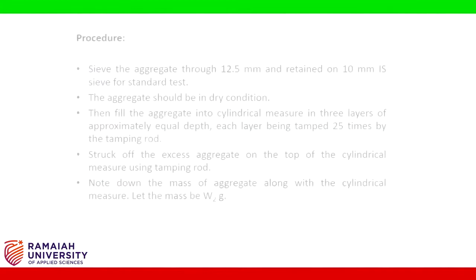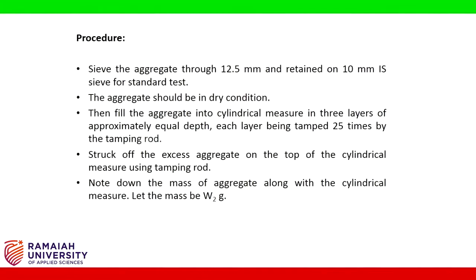To achieve high quality pavement, aggregates possessing a low crushing value should be preferred. Procedure: sieve the aggregate through 12.5 mm and retain on 10 mm IS sieve. For the standard test, the aggregate should be in a dry condition. Then fill the aggregate into the cylindrical measure in three layers of approximately equal depth, each layer being tamped 25 times by the tamping rod. Strike off the excess aggregate on top using the tamping rod and note down the mass of aggregate plus cylindrical measure as W2.